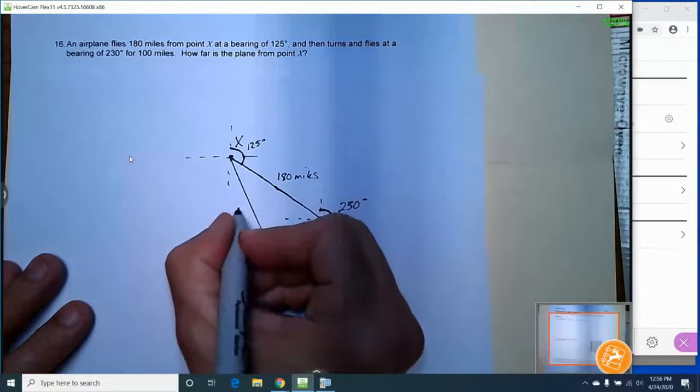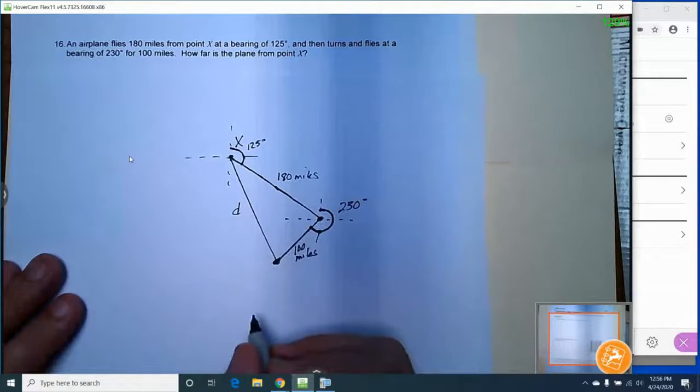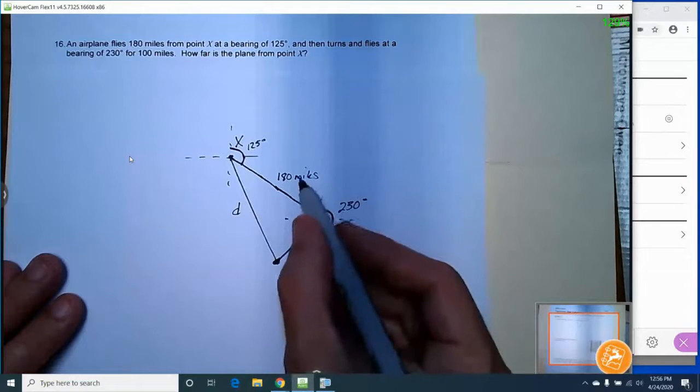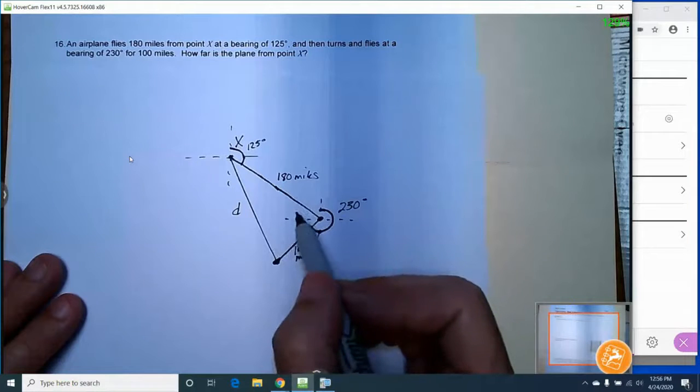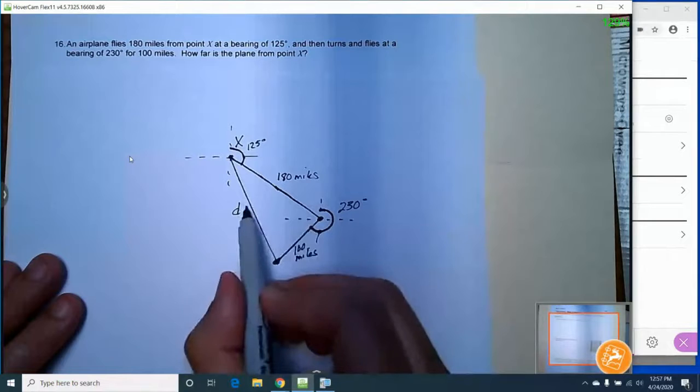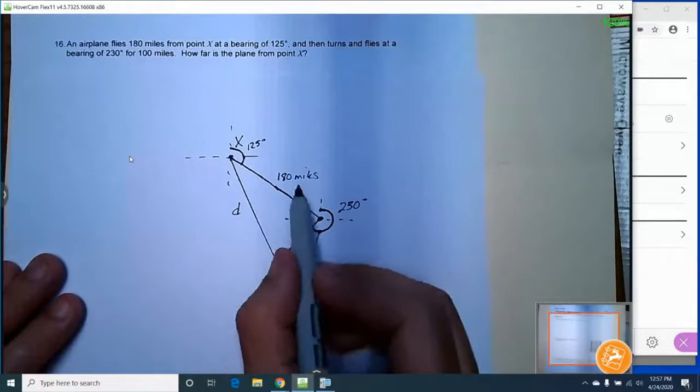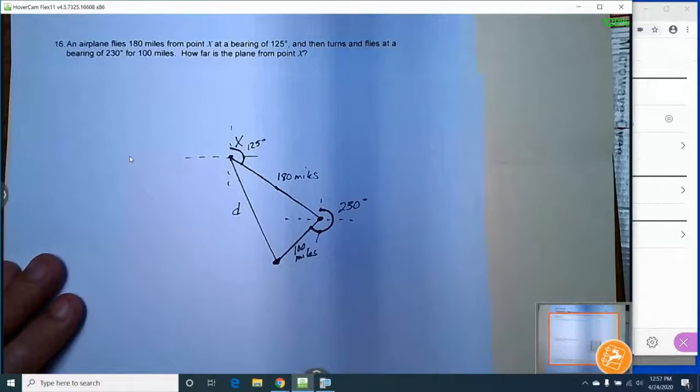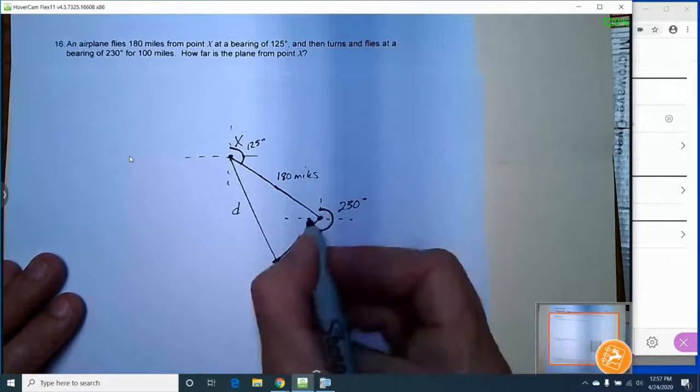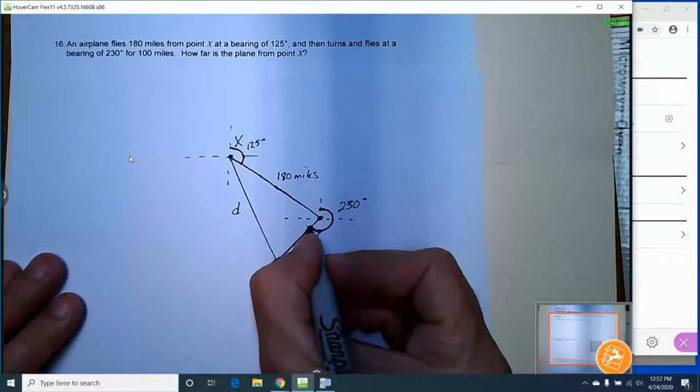What we're trying to find is this side over here. So I'm going to call this D for distance. We have these two sides. But this is not a right triangle, so we can't use the Pythagorean theorem. If we can find the angle across from this side, then we've got the two sides on either side of that. So we could use the law of cosines.